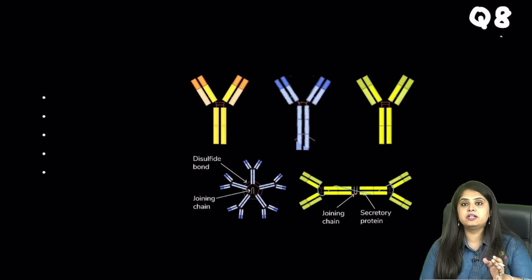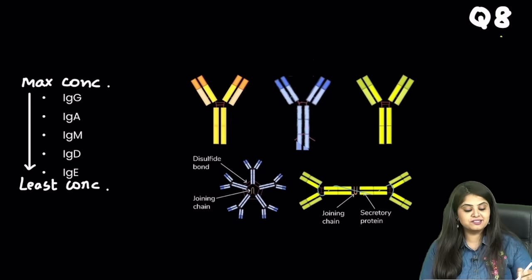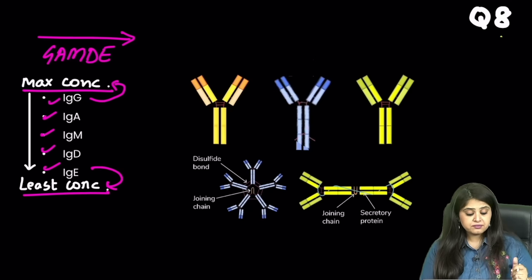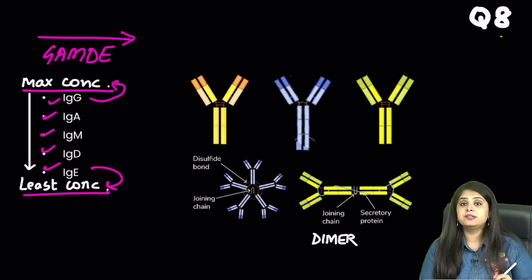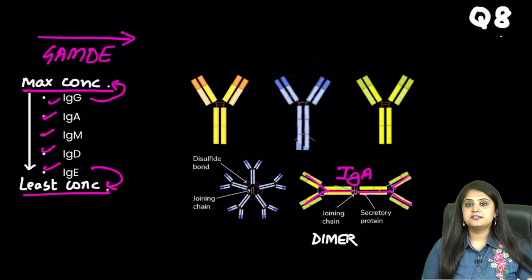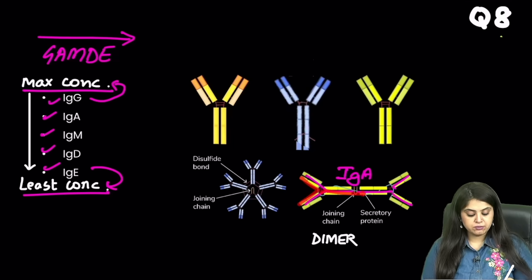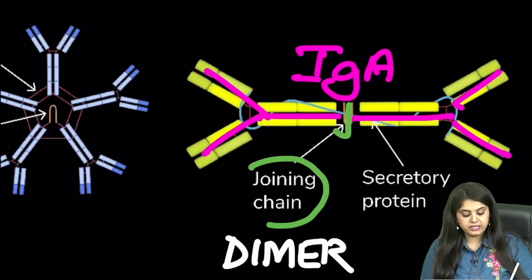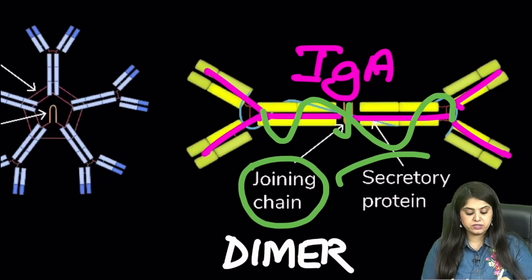Moving on to question 8: an immunoglobulin image. The question is which immunoglobulin it is. We always get the sequence GAMD, because from maximum to least concentration it is IgG, A, M, D, E — G has maximum concentration, E has least. The one that always appears as a dimer — two antibodies stuck together — is IgA. In the recent INICET exam, this dimeric structure was asked. These two antibodies are joined by a joining chain, and to hold them together there is another protein called the secretory protein.